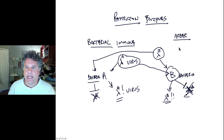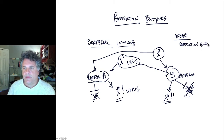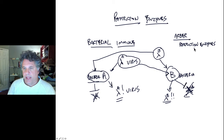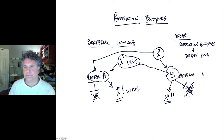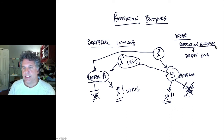What Arber discovered was that different bacterial strains produce different enzymes called restriction enzymes. They are called restriction enzymes because those enzymes restrict the growth of particular viruses. Strain A had restriction enzymes that would restrict the growth of lambda B phage. What these restriction enzymes do is they digest DNA — they cut DNA.